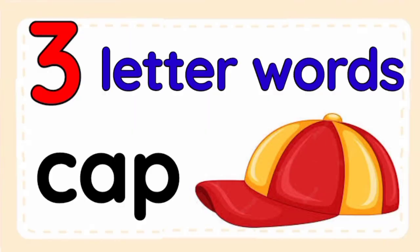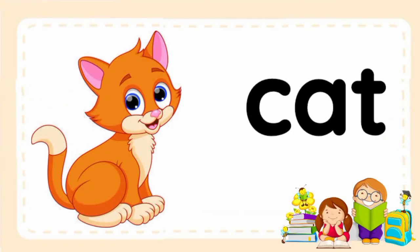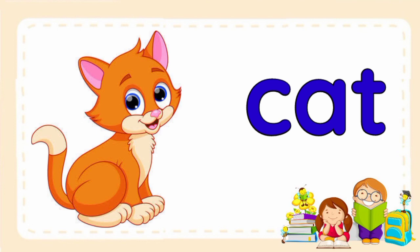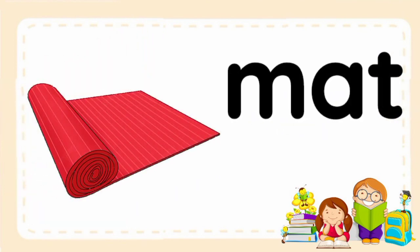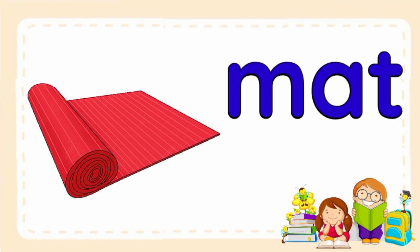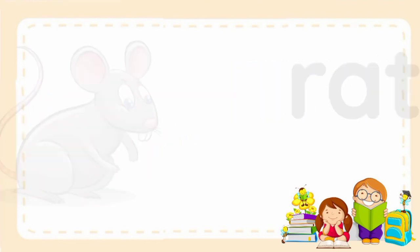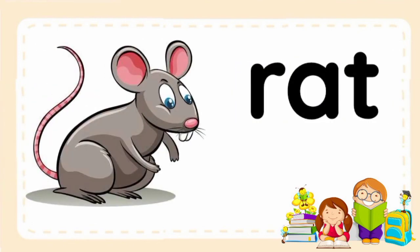Three-letter words in English. Now let's learn a few three-letter words. Cat — a cat. Mat — a mat. Rat — a rat.